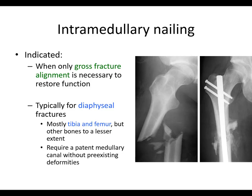Intramedullary nailing involves rods placed in the intramedullary canal. They're indicated when it's acceptable to have only gross fracture alignment to restore function — typically for diaphyseal fractures, mostly the tibia and femur, though the humerus and other bones with a canal can also be nailed. They do require a patent medullary canal without pre-existing deformities, because these rods come in commercially available sizes, widths, and curves and cannot be really shaped. If a patient has too much atypical bone morphology, the rod won't go in.